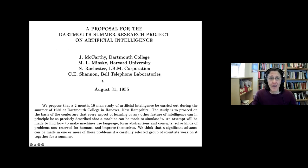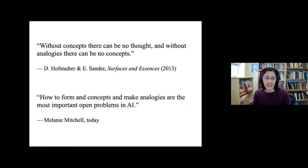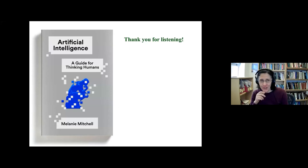But interestingly, back in 1955 when these four pioneers of AI wrote a proposal for the first big meeting on AI, the Dartmouth summer research project, they proposed that some of the most important things that they would work on was how to make machines use language, form abstractions and concepts, and solve the kinds of problems now reserved for humans and improve themselves. And you can say that these are still the biggest problems in AI, especially forming abstractions and concepts. In their book Surfaces and Essences about analogy, Hofstadter and Sander said, without concepts, there can be no thought, and without analogies there can be no concepts. And I'll add to that and say how to form concepts and make analogies are the most important open problems in AI. So I'll stop there. If you're interested in this, I talk about this in great detail in my book, my recent book about AI, and I'm happy to answer any questions.